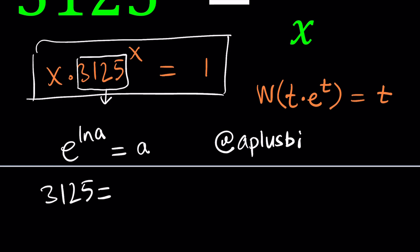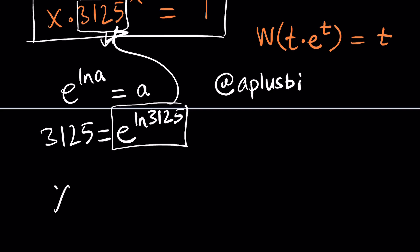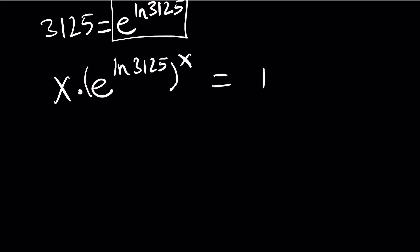How do we use that information? It means 3125 is e to the power ln 3125. So I'm going to go ahead and replace 3125 with that. And of course, I need to raise it to the power x. E to the power ln 3125, if you don't mind, I'm not using parentheses. But this needs to be raised to the power x. And then it's equal to 1. These are exponents, so they need to be multiplied. I want to write the x first. So I'm going to write it as x times e to the power x times ln 3125. And then it's equal to 1.